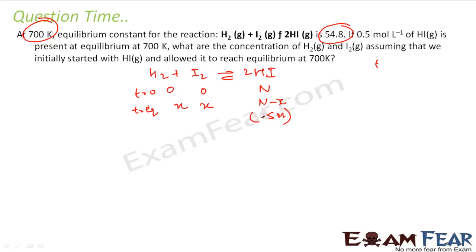So you start with n moles; this becomes n minus 2x because it is 2HI. If you take 2 moles of x, the next moles will be x because it is 2HI. But n minus 2x is 0.5, which is given, and the whole value of Kc is also given.